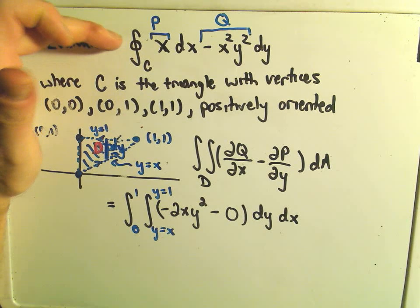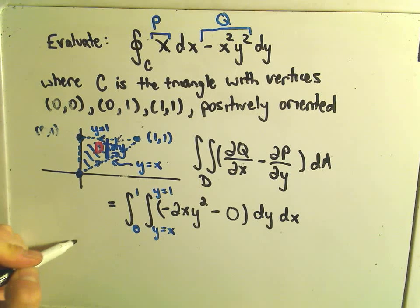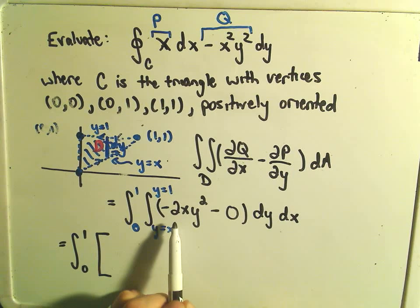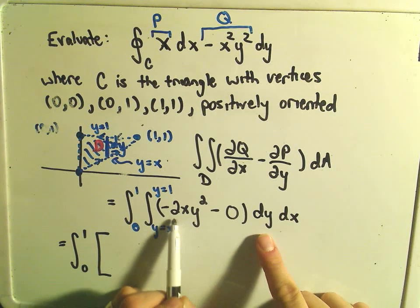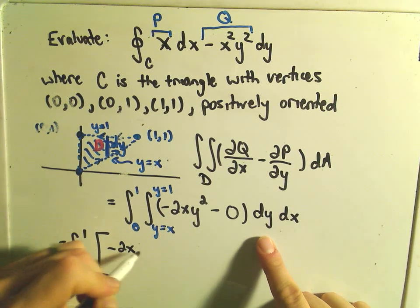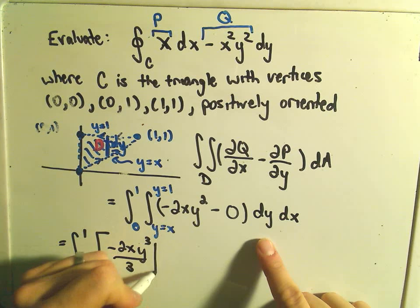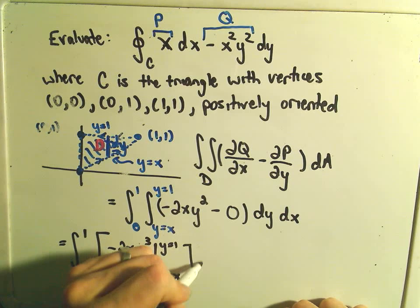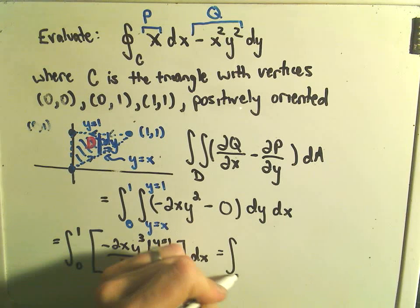So again, we've turned a line integral into just a double integral, so hopefully this one won't be too bad to compute. Let's just go ahead and grind it out here. We'll have to integrate from 0 to 1. You've got to integrate negative 2xy squared with respect to y, so we treat the negative 2x like a constant. When we integrate, we'll get y cubed over 3. We'll have to evaluate that from y equals x to y equals 1, and then integrate all that with respect to x. So again, not too bad, just a little tedious.